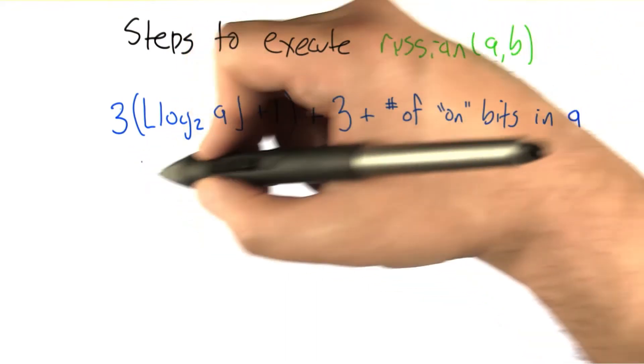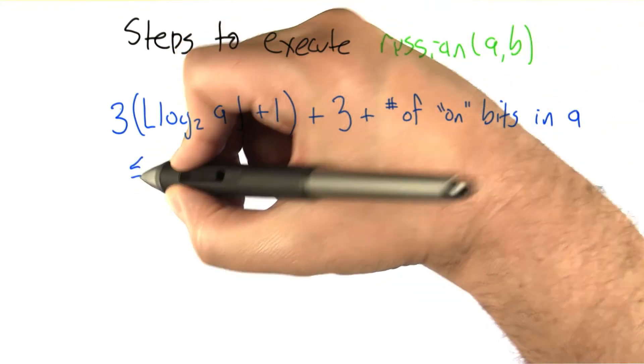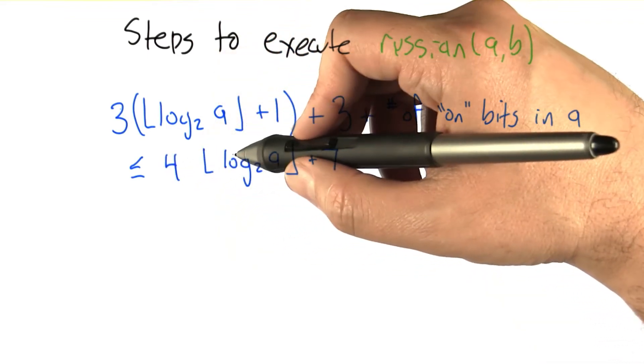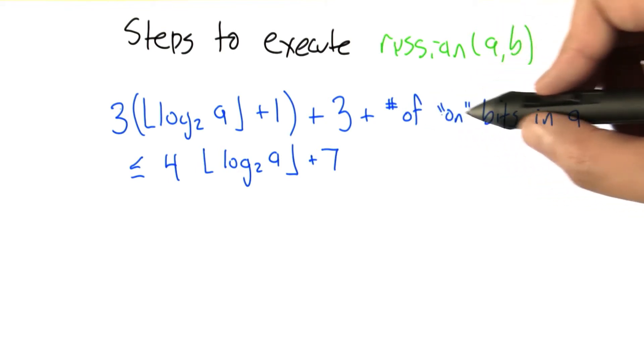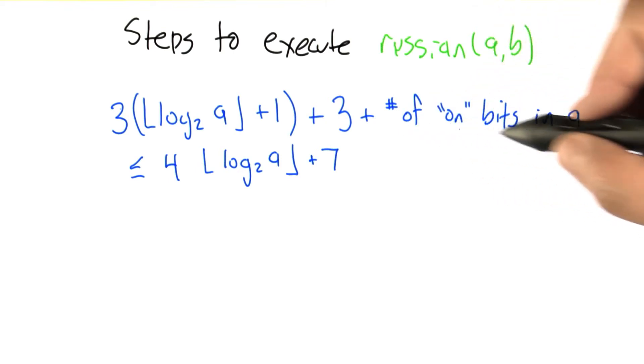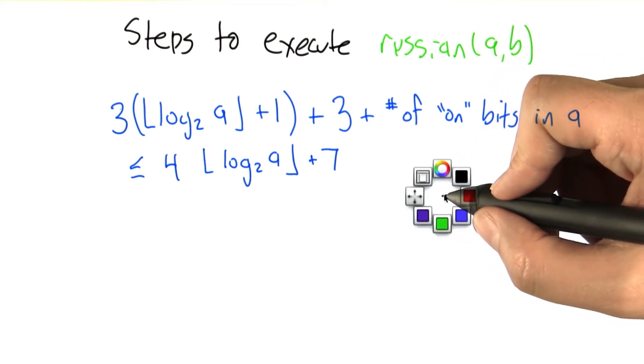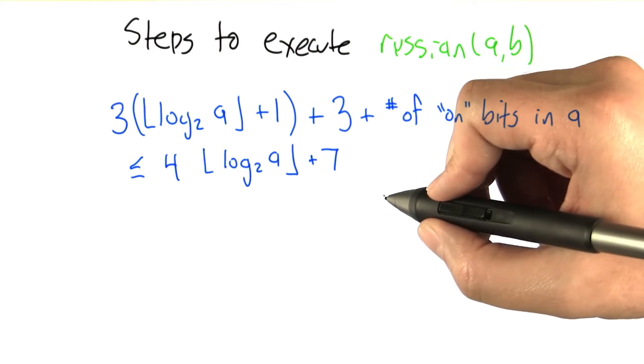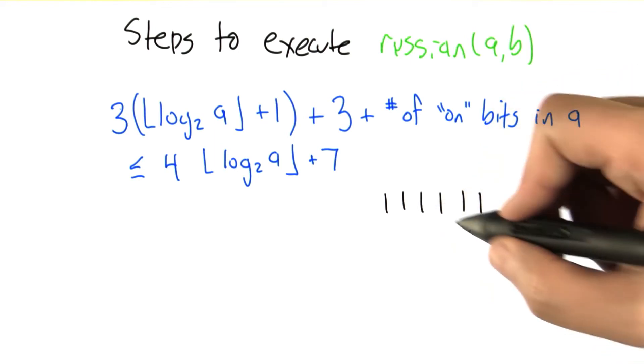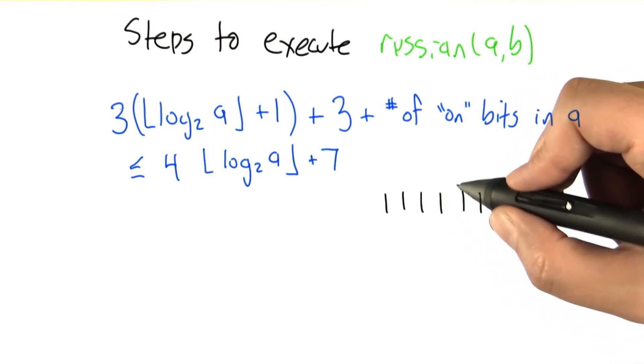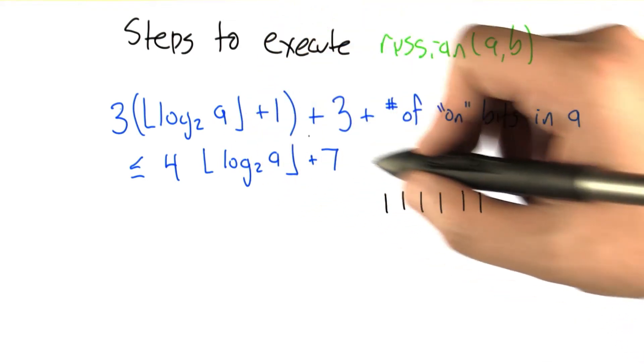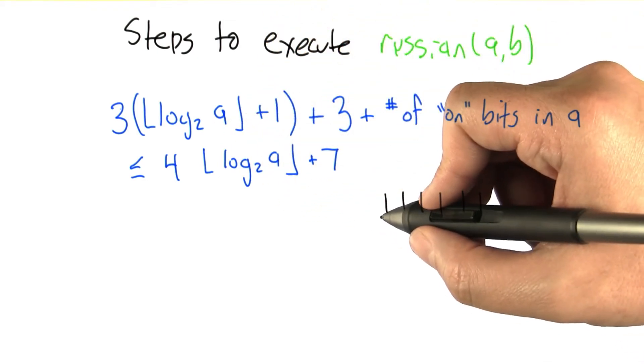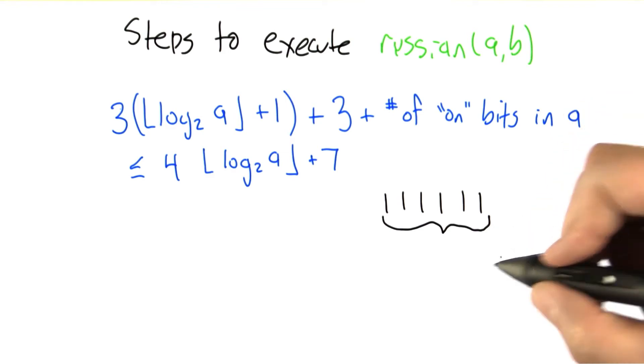We can make it slightly less of a mess if we notice that this is upper bounded by 4 times the rounded down logarithm of a plus 7. The reason for that being that the most number of on bits you can have in a number is if all the bits are on and how many bits can you have in a number? Well, if you have a number like this, a binary number like that, each time you have it, you're chopping off one of the bits. The rounded down log base 2 of the number plus 1 is actually a count of the maximum number of bits that you can have on.